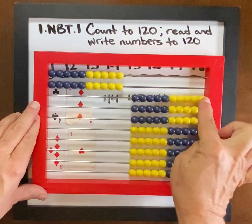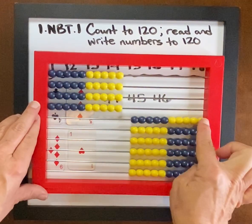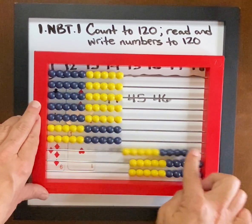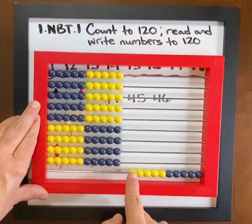1, 10, 2, 10, 3, 10, 4, 10. And I would count like this with the students. 5, 6, 10, 7, 10, 8, 10, 9, 10, 9, 10, 1.